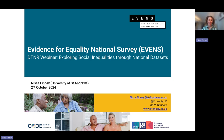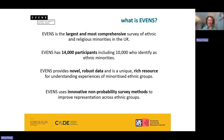I'm Nisa Finney and I'm going to talk about the Evidence for Equality National Survey (EVANS) and how these data can be used to research inequalities. EVANS is the largest and most comprehensive survey of ethnic and religious minorities in the UK. The data were collected in 2021 and there are over 14,000 participants, including 10,000 who identify as ethnic minorities. This dataset is really very novel and rich for understanding inequalities between ethnic groups.